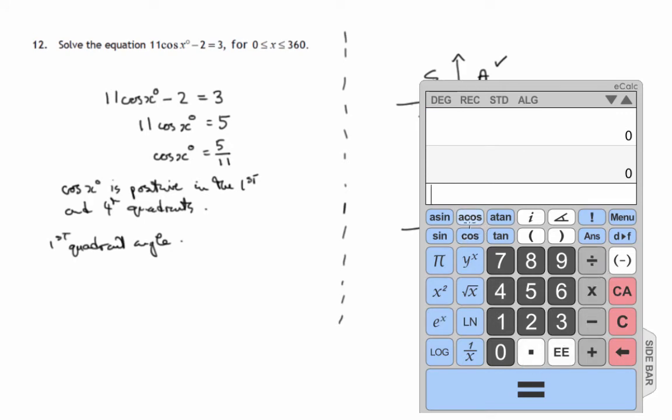On this calculator, A cos, sometimes it's cos to the minus 1. This is short for arc cos. I think of it as the angle whose cosine is. So the angle whose cosine is 5 11ths, 5 divided by 11, and I have to close brackets in this calculator, checking that I'm in degrees. The angle whose cosine is 5 11ths is equal to 62.96 and so on. First quadrant angle is 62.96 and so on. So x is approximately 63.0. So we're rounding off to one decimal place.